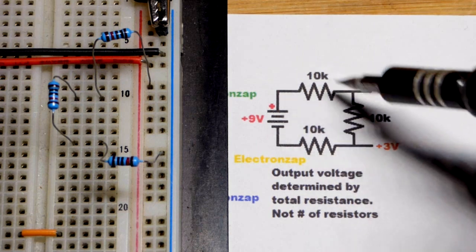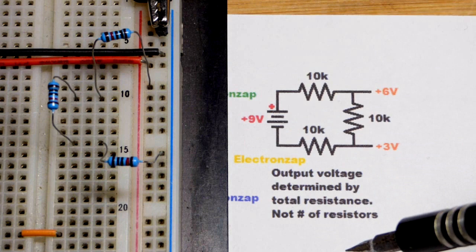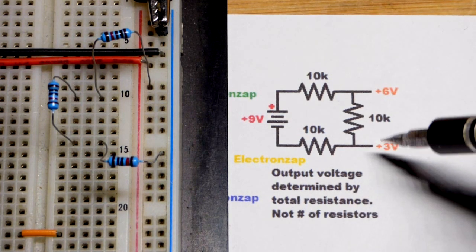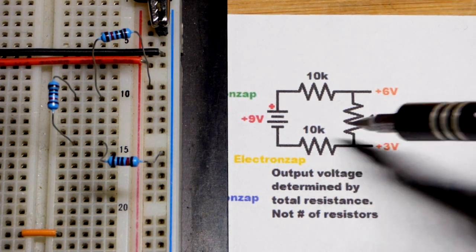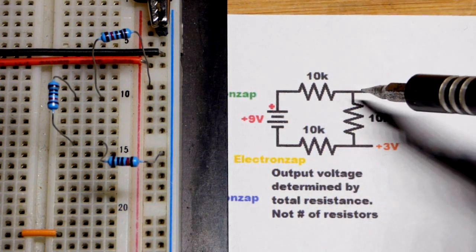I wrote a note there: again, it's the amount of resistance that it has to go through in relationship to the resistance to ground that determines the voltage coming out, not the number of resistors. With three equal value resistors it's easy to break it into two-thirds and one-third supply voltage.